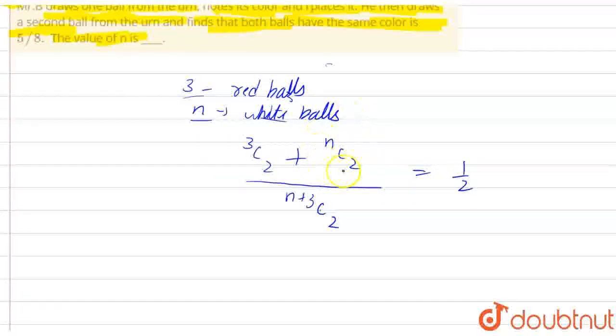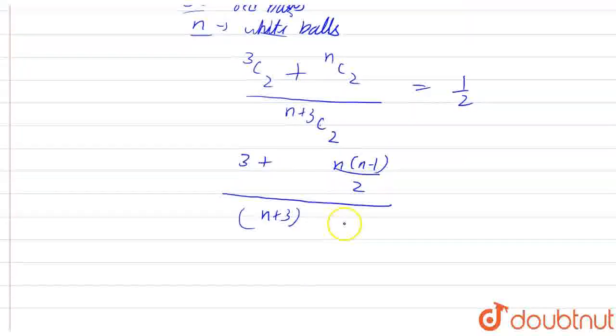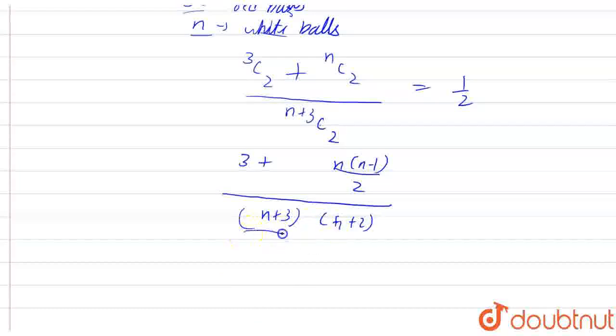Now if I solve this equation, I will get 3C2 plus nC2, which is 3 plus n into n minus 1 divided by 2, whole divided by n plus 3C2, which is n plus 3 into n plus 2 divided by 2.